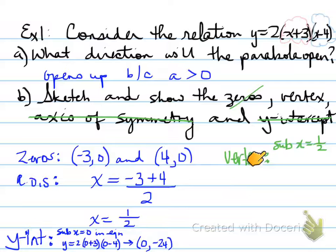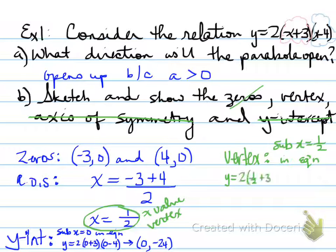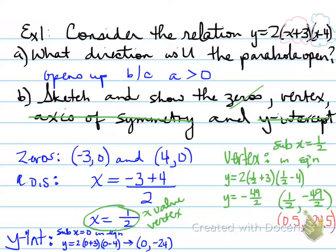We need to move forward and find the last piece, which is our vertex. Notice I have this written here, sub x equals 1 half. Why am I subbing the axis of symmetry into the vertex? That is because our axis of symmetry actually is our x value of our vertex. So the only piece we're missing is our y value. Plug it in to the equation, and we get y equals negative 49 over 2.